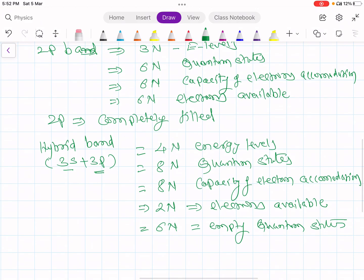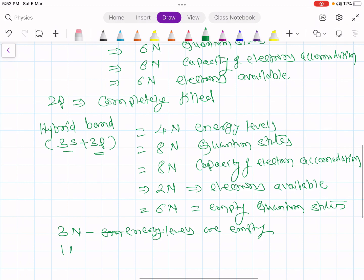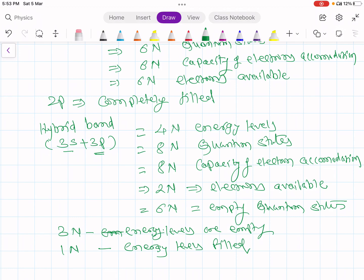In other words, you can say 3n energy levels are empty. And only 1n energy levels filled. So only 1/4th band is filled with the electrons. 3/4th band is empty.